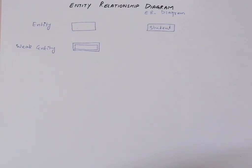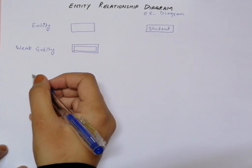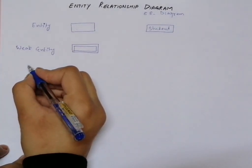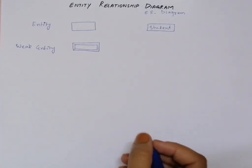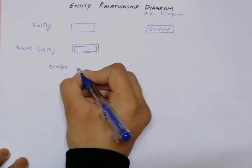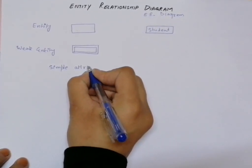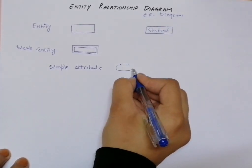Coming towards the properties — the properties of any entity are known as attributes, or the things that define a particular entity are its attributes. In order to represent an attribute, we have different notations. The first is a simple attribute. When we talk about a simple attribute, the way to represent it is by using a single oval.